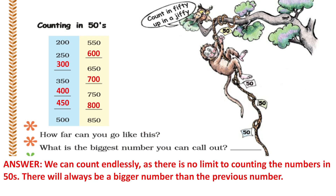Counting in fifties: 200, 250, 300, 350, 400, 450, 500, 550, 600, 650, 700, 750, 800, 850. We can count endlessly as there is no limit to counting numbers in fifties — there will always be a bigger number than the previous one.